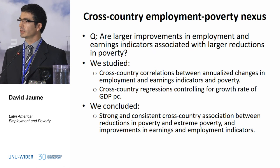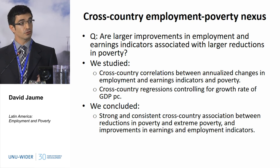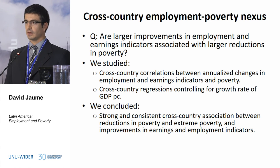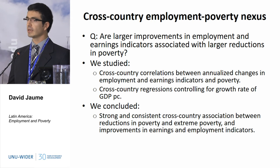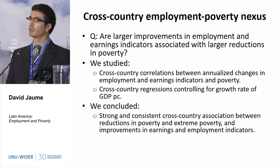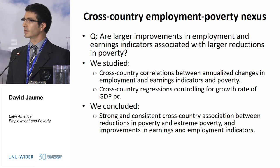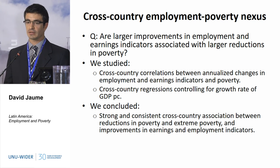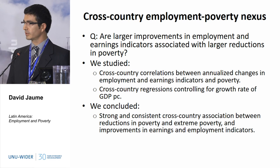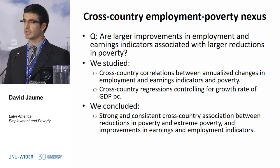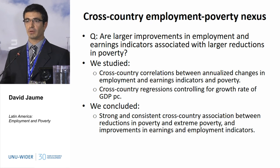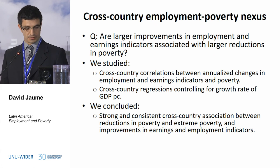Now let me concentrate on the last point: the cross-country evidence on the employment and poverty nexus. We saw that increases in the rate of economic growth are not tightly related to better performance in labour market indicators. But what about the relationship between employment and earnings indicators and changes in poverty? Are countries that have larger improvements in labour market indicators also seeing larger reductions in poverty? What we found is yes — there is a very tight relationship between improvements in labour market indicators, improvement in employment and earning conditions, and the reductions in poverty.